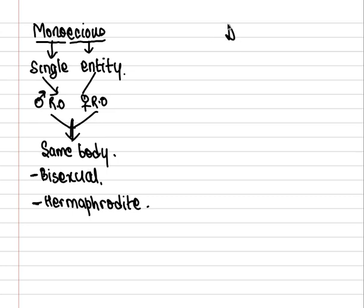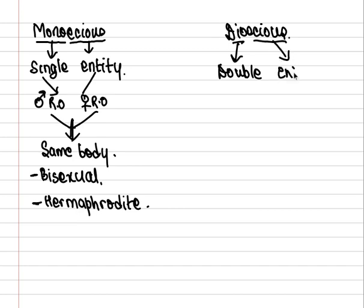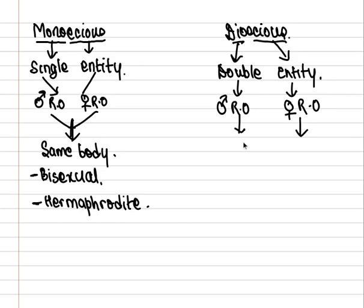Dioecious: 'di' means double, 'oecious' means entity. Double entity means male reproductive organs and female reproductive organs are on different bodies. So they exist as two types of identities, and each identity has a single type of sex organ. So they are called unisexual organisms.